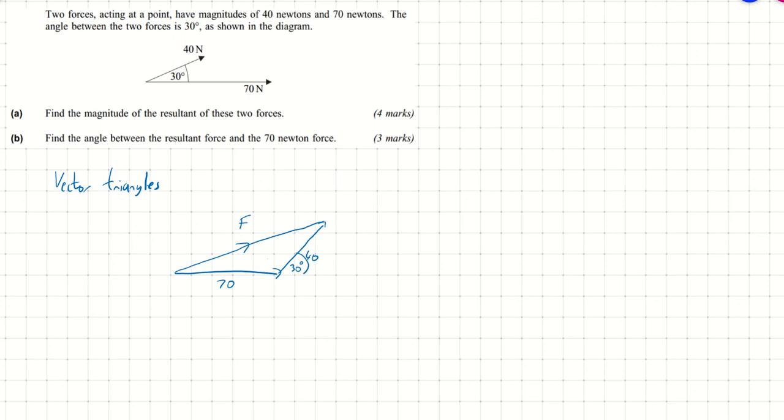Which means that this angle here is 150 degrees. Now the first part is to find out the magnitude of the resultant force. Well, we can use this using the cosine rule. So remember, cosine rule: a squared equals b squared plus c squared minus 2bc cos A.